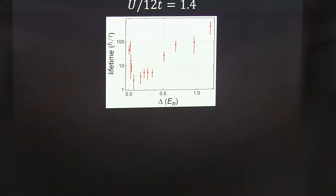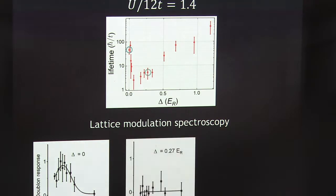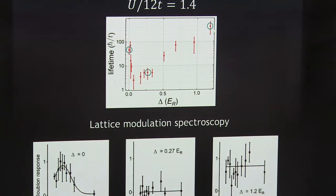We also did lattice modulation spectroscopy here to find out what was happening from that perspective. In the clean state right here, there's a peak in the doubleon response close to U, which is about what it should be. When there's a relatively short doubleon lifetime, that modulation spectroscopy produces a flat curve with no particular special modulation frequency. As we turn the disorder up even higher, that remains flat, but in fact there's more response which is sort of interesting. So what you're seeing is something that looks kind of gapped — like it's a Mott insulator — it collapses to something which is not gapped, and then it picks up more and more modulation spectroscopy response as we turn up the disorder.